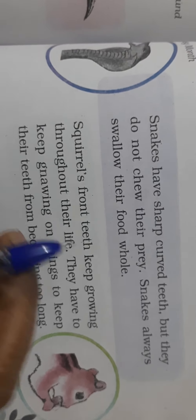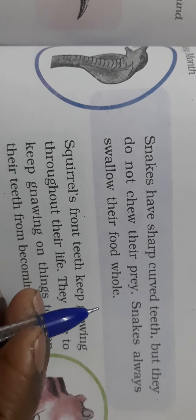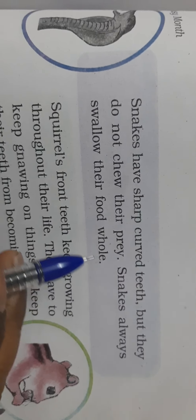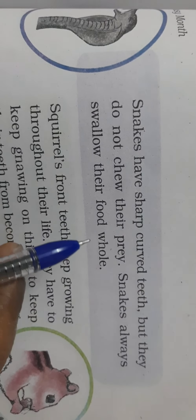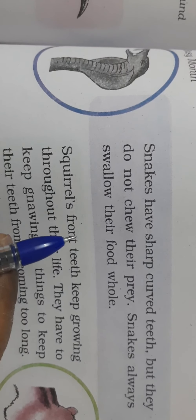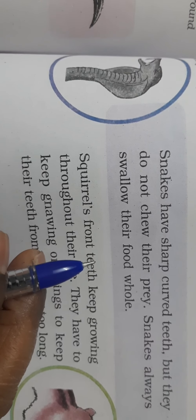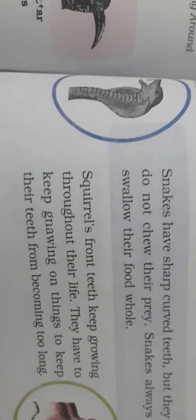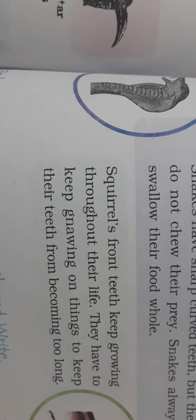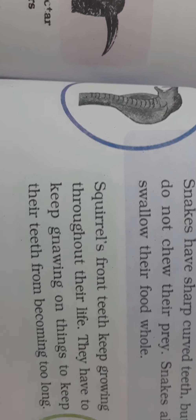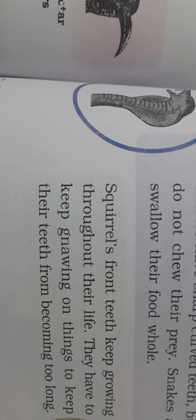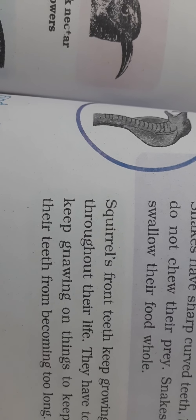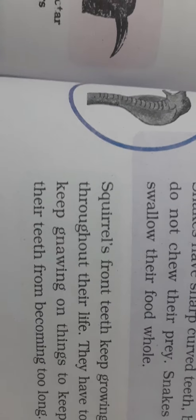Snakes have sharp curved teeth, but they do not chew their prey — snakes always swallow their food whole. The snake's teeth are mostly used for venom. So the snake does not chew its food — it swallows it completely.